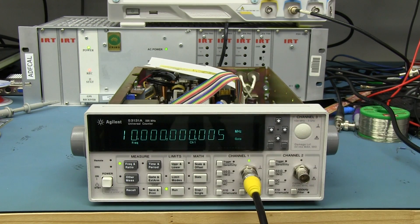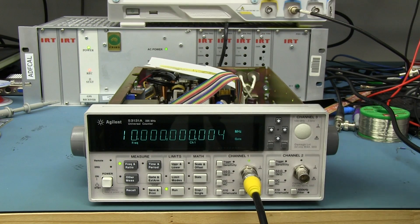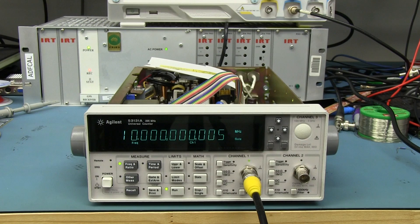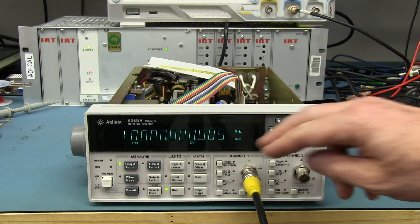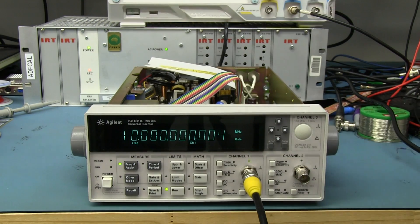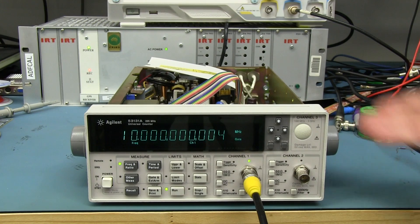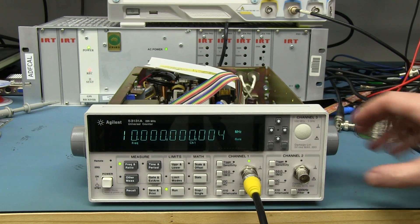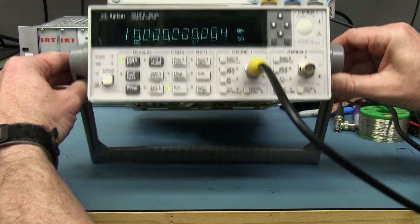I've got my Agilent 53131A frequency counter here, an excellent frequency counter. It's got a built-in high-stability ovenized reference oscillator, and it's measuring the 10 megahertz reference frequency from my external CSIRO rubidium frequency standard here. Watch what happens if I just increase the tilt-in bail, put the tilt-in bail up.